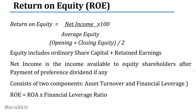Return on equity is again simple and self-explanatory. It is the net income on average equity — opening plus closing capital divided by 2. Equity includes ordinary share capital and retained earnings. The net income used is after the payment of preference dividend, if any. So it can be taken as net income minus preference dividend.